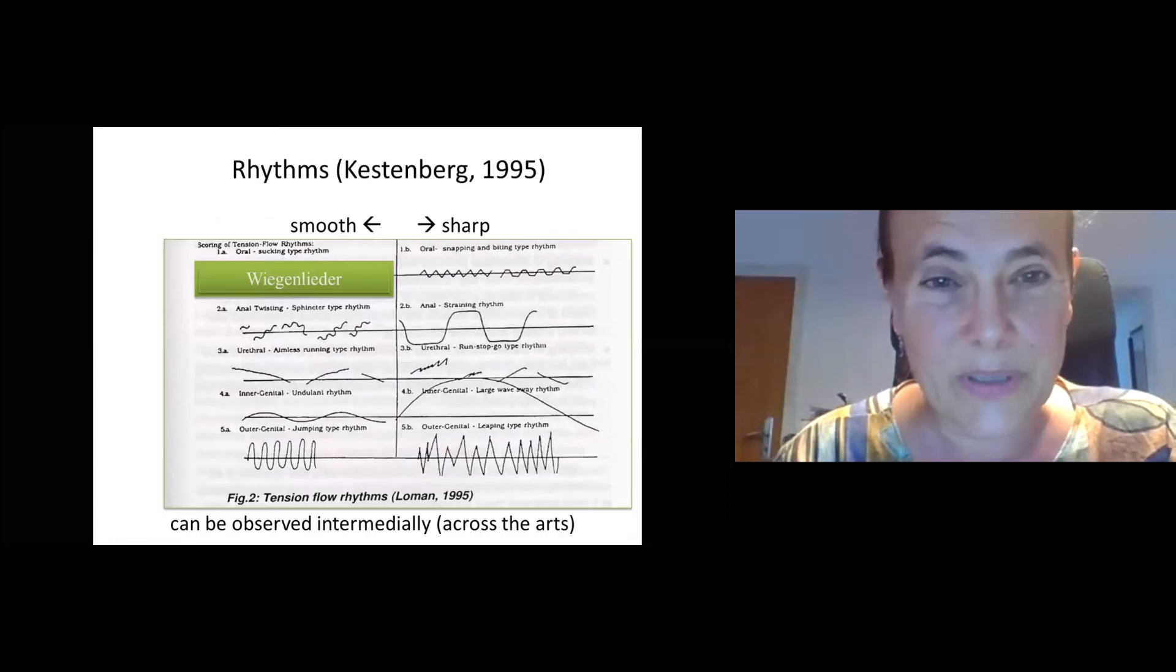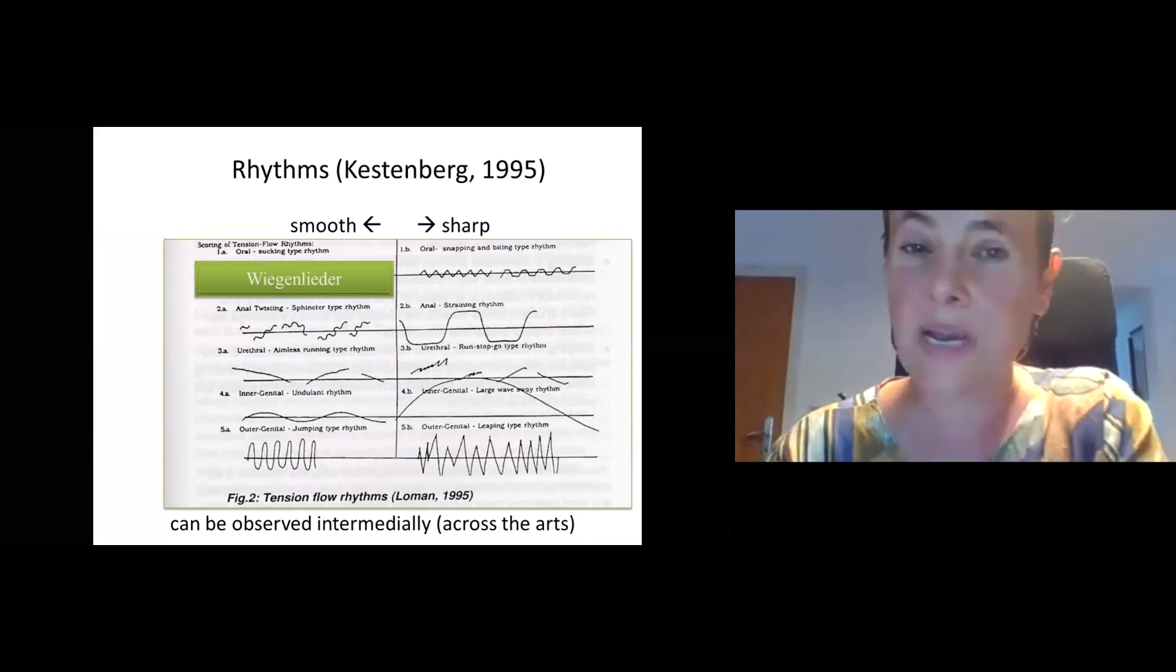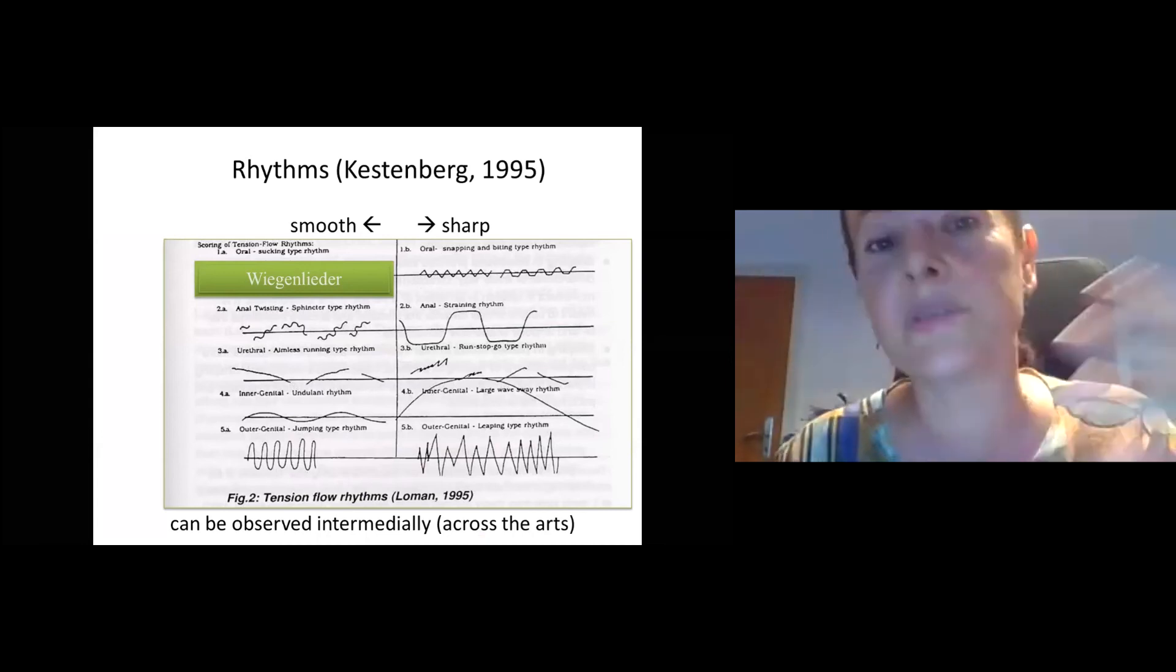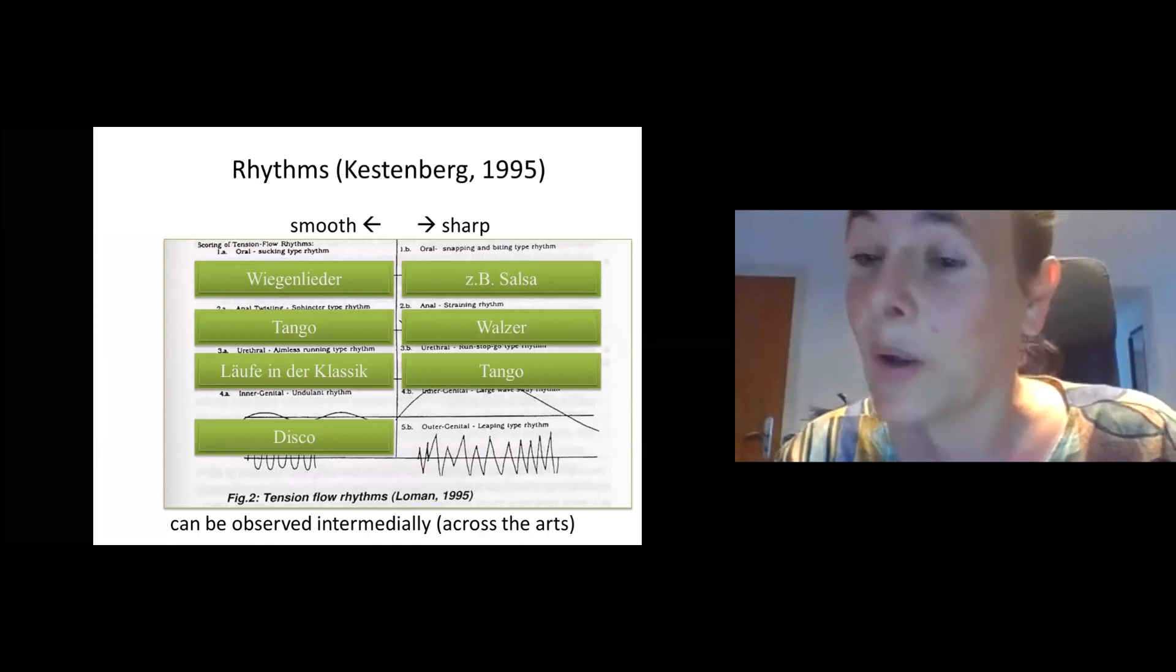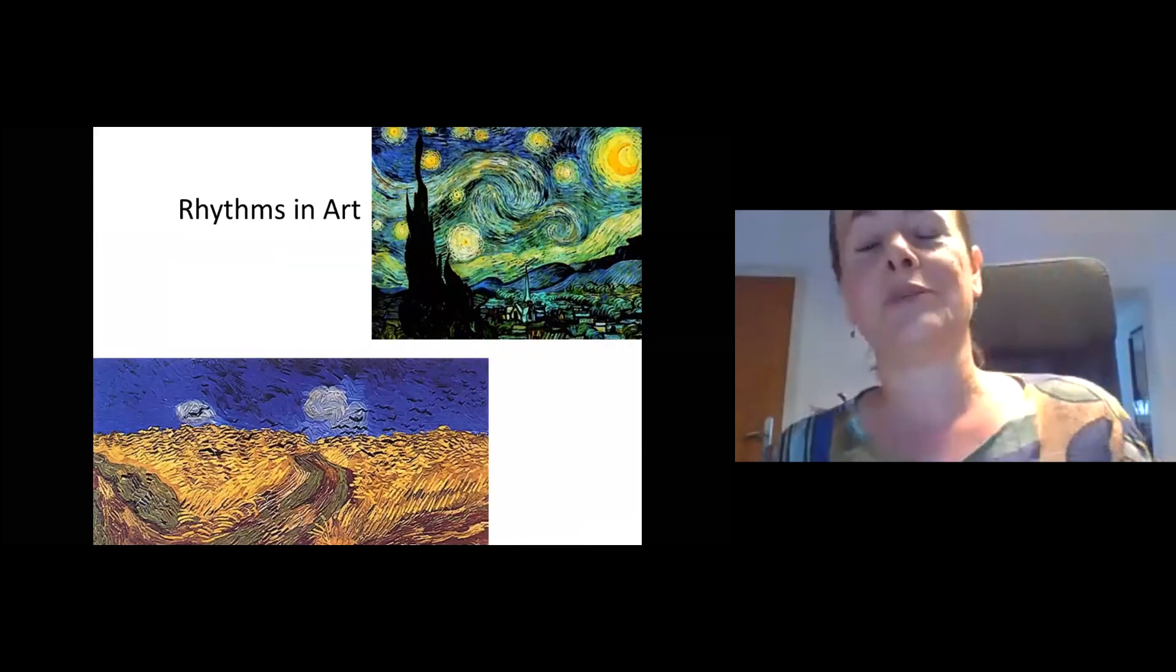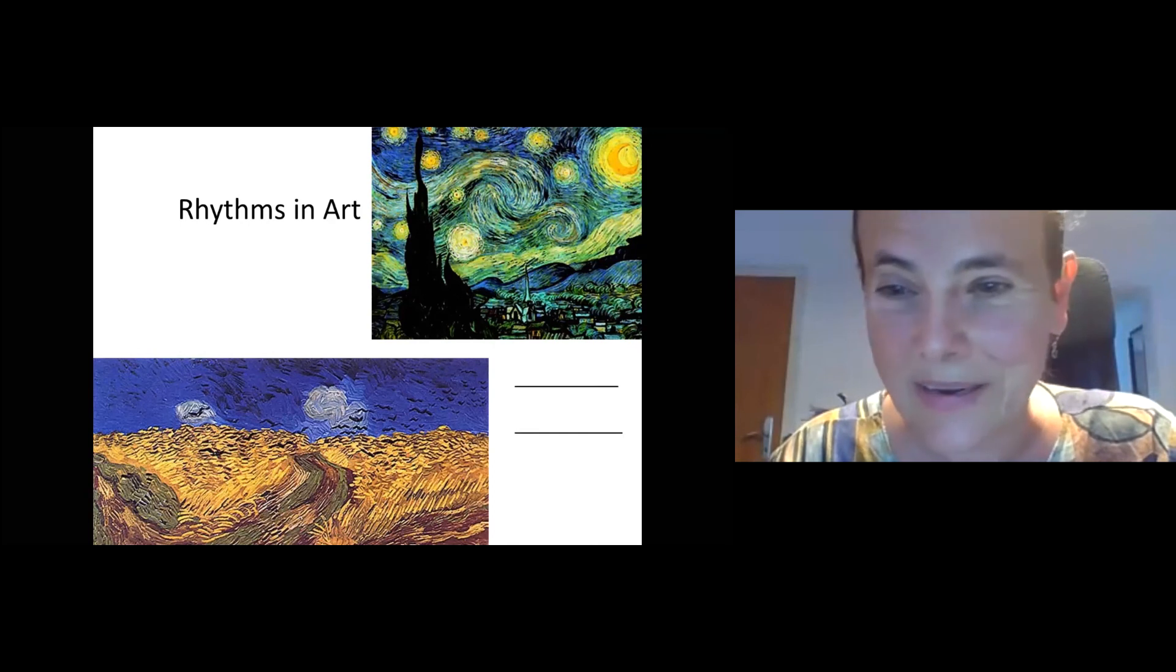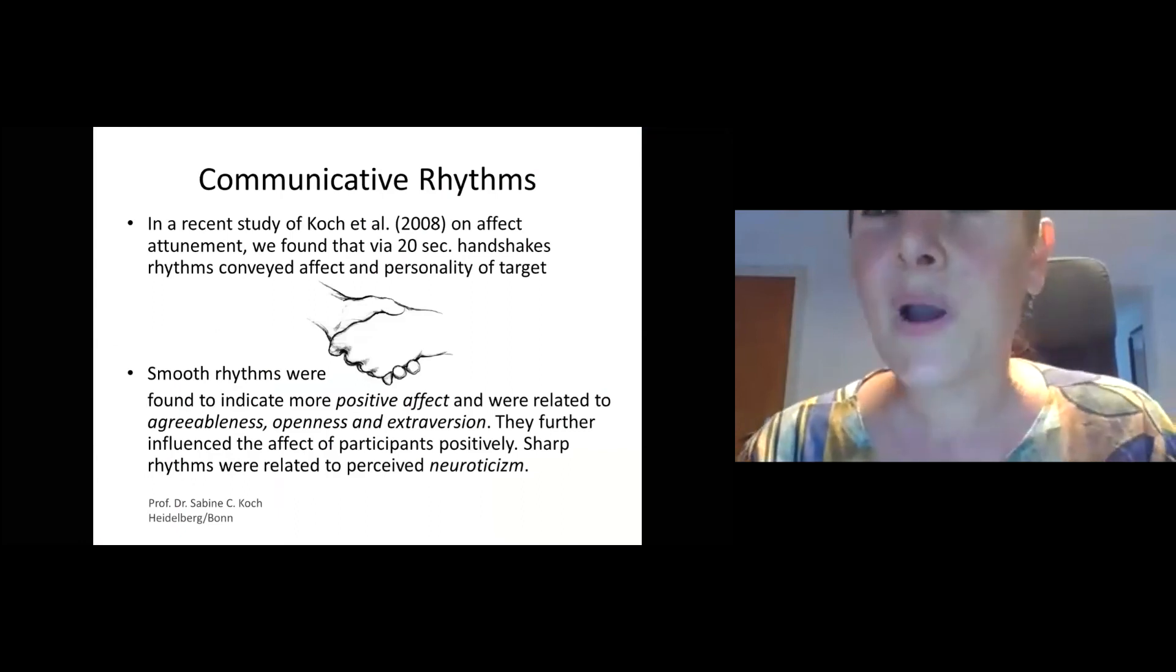There are songs that you can directly connect to these rhythms. For example, all the lullabies all over the world are in an oral rhythm so that they actually calm down the kids. They have this very sinus-curve-like, very frequent pattern. Also in art you can find these rhythms. For example, Van Gogh has a lot of twisting rhythm in his paintings, and that of course is also expressing needs.